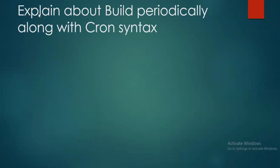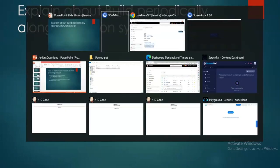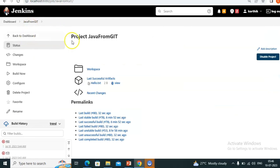Welcome back. In the next three to four classes we will discuss about build triggers — why we need them, how we need to do it, and what are the different options. This is a very important topic. Every organization — I can say 100% of companies — will use these options. This is our Java project and related Git URL.